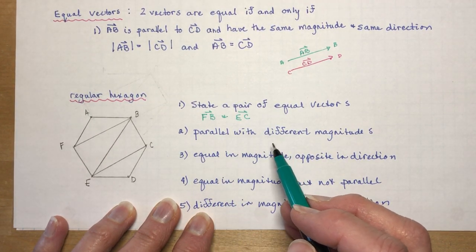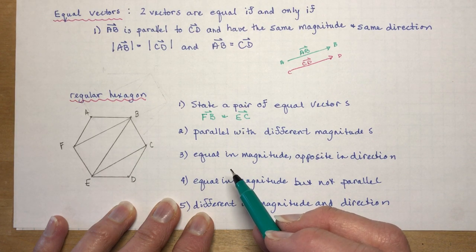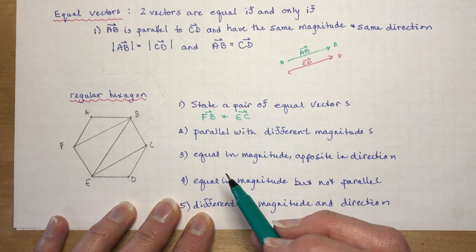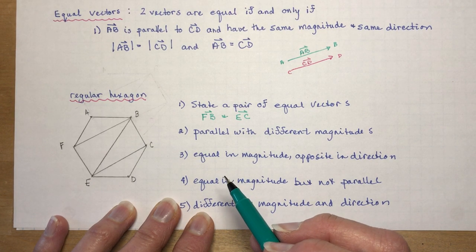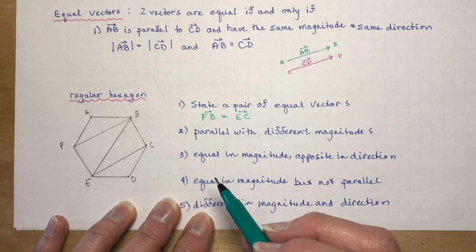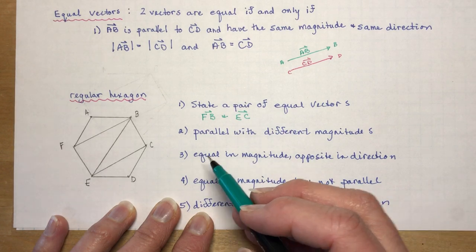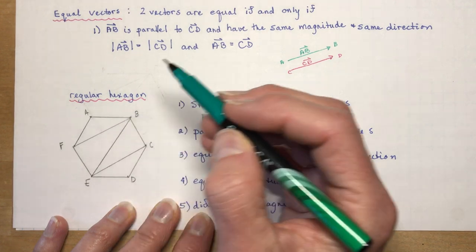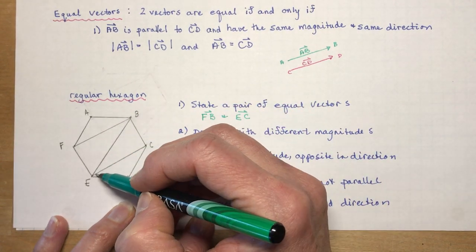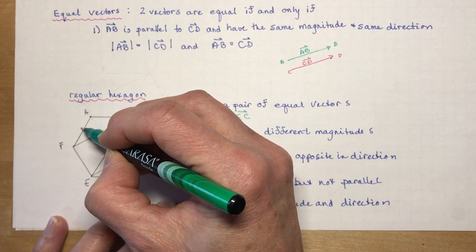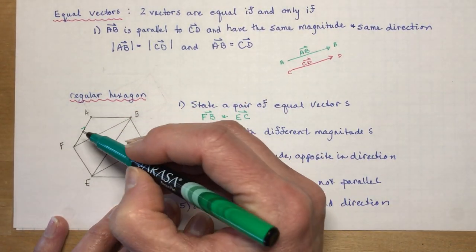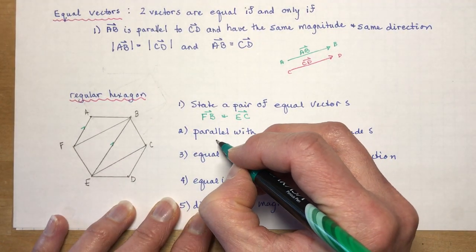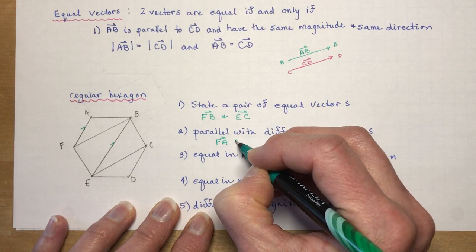State parallel with different magnitudes. So parallel with different magnitudes, you're looking for something that has a different magnitude. So FA and EB, these are parallel. That's parallel to that one, but the magnitude of this one is probably about half of that one. So we'll say FA and EB.